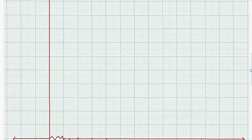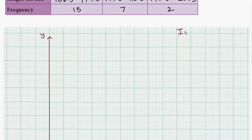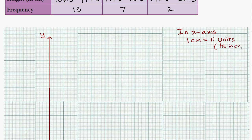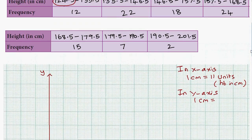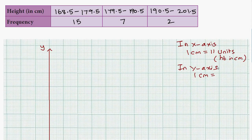On the horizontal axis we have height in centimeters, with an arrow mark. The scale on the x-axis is 1 centimeter equals 11 units. On the y-axis, we have frequency, which represents the number of people. The y-axis scale is 1 centimeter equal to 2 people, since we are dealing with the distribution of heights of 100 people.